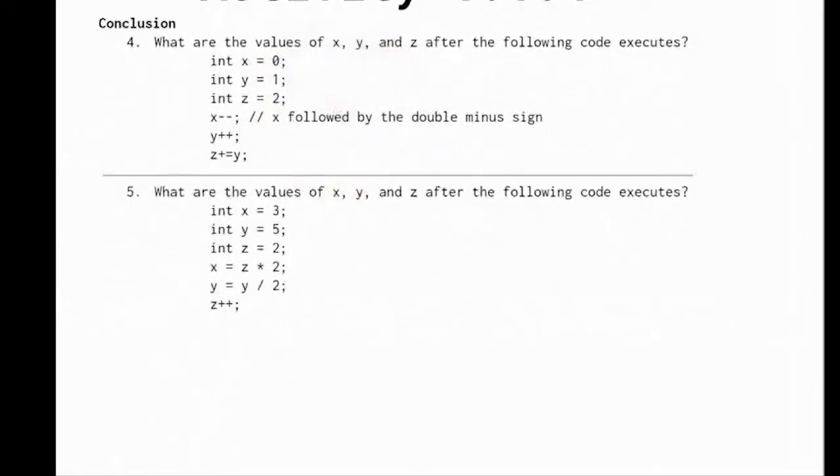So it says what are the values of x, y, and z after the following code executes. So the way that works, I'm basically going to be doing number four over here. Okay, so the way that's going to work is if we have x, we have y, and we have z.